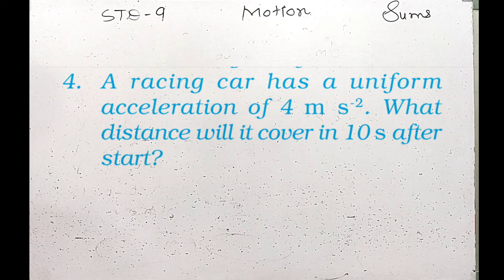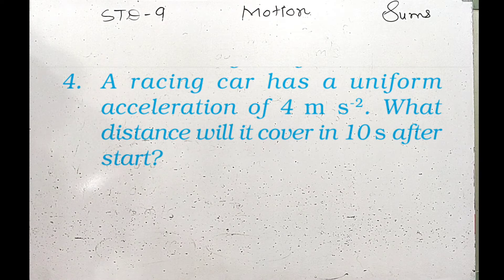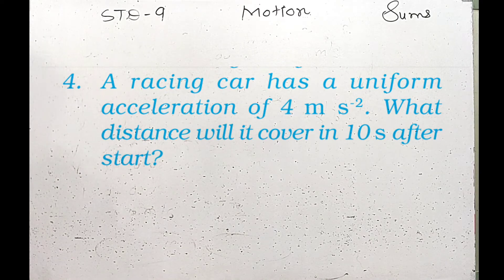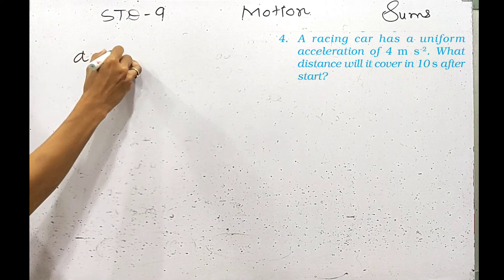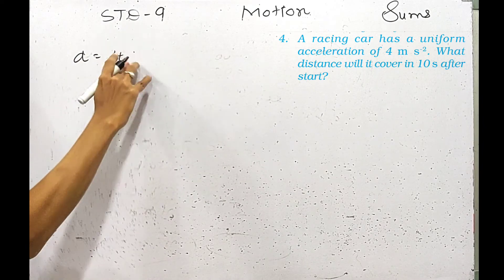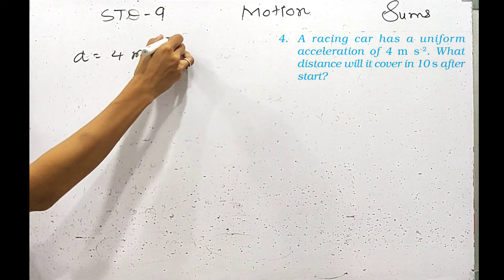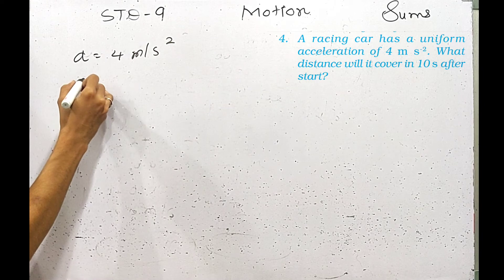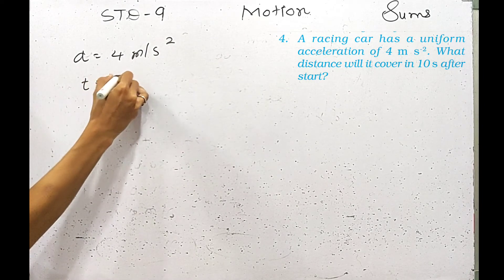Next question: A racing car has a uniform acceleration of 4 meters per second squared. I have told that racing car acceleration is 4 meters per second squared. I have to find the distance if its time is 10 seconds.